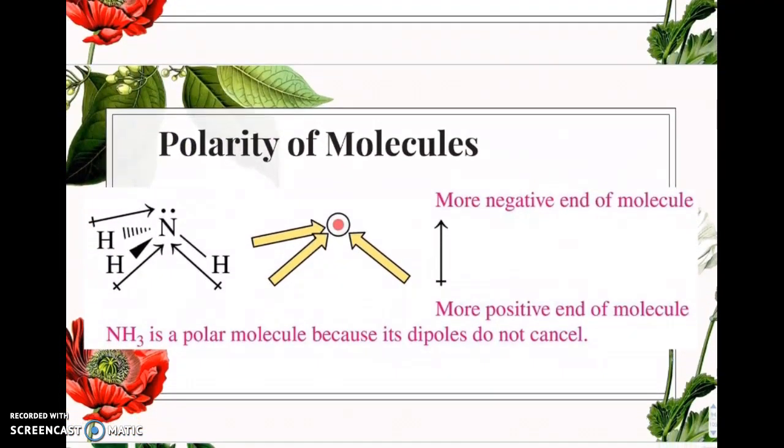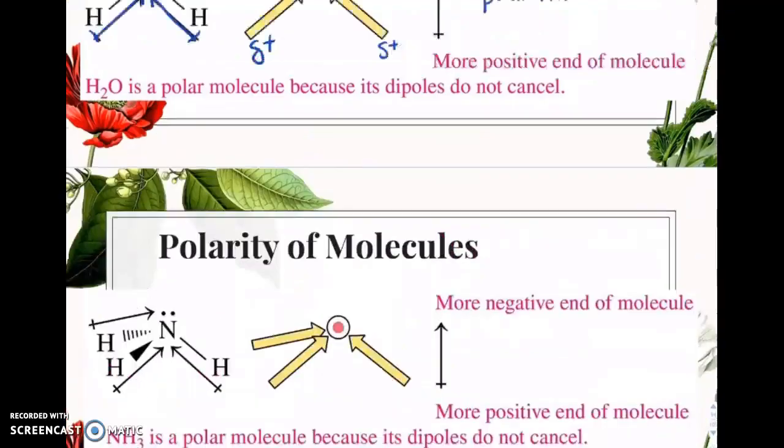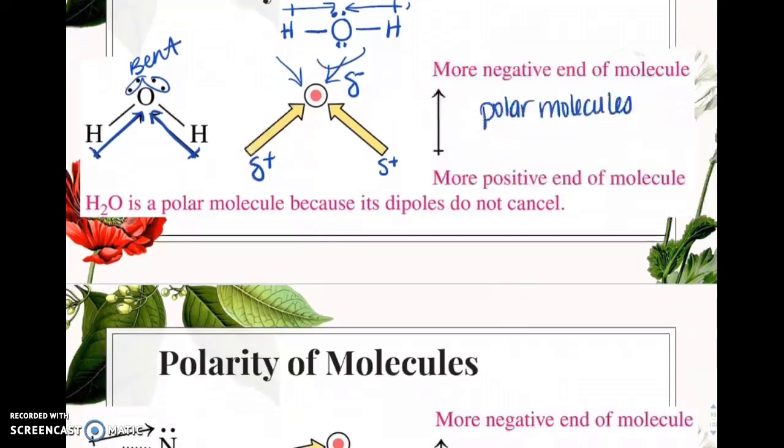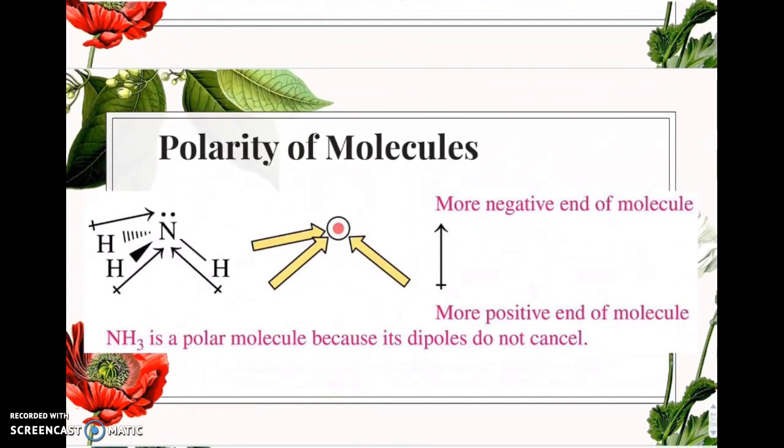Here's another example. You may notice that both of these molecules have a lone pair of electrons on the center atom. That's an indicator that you have a polar molecule.